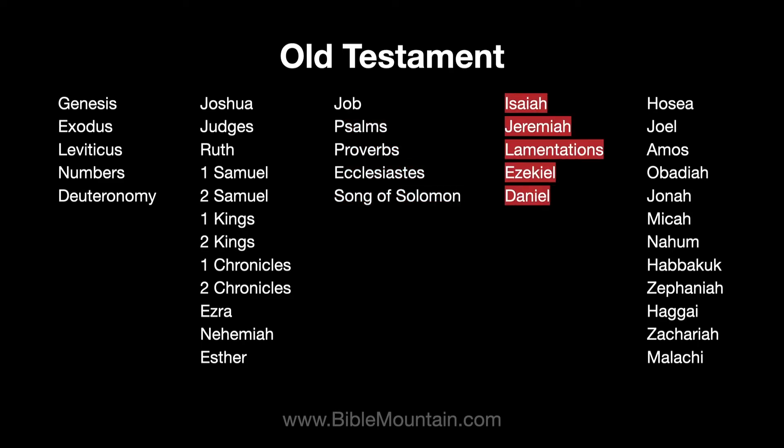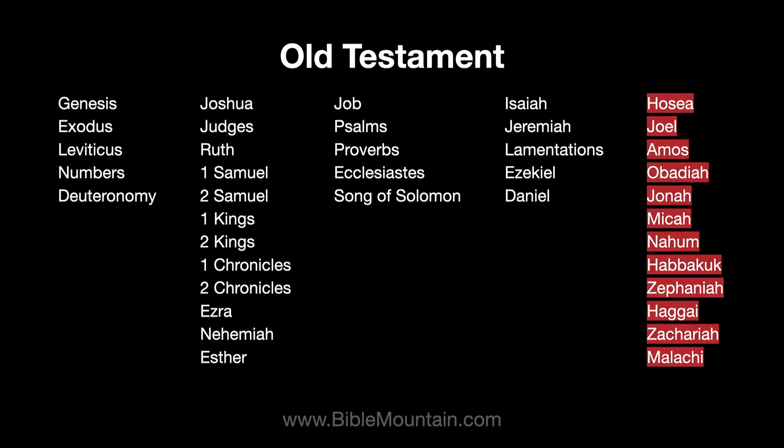The next five books are what we call the Major Prophets: Isaiah, Jeremiah, Lamentations, Ezekiel, and Daniel. Those are prophecies that were written and prophesied during the events recorded in the Books of History. The last 12 books are the Minor Prophets: Hosea, Joel, Amos, Obadiah, Jonah, Micah, Nahum, Habakkuk, Zephaniah, Haggai, Zechariah, and Malachi. Those contain prophecies that were also prophesied and written during the events recorded in the Books of History.